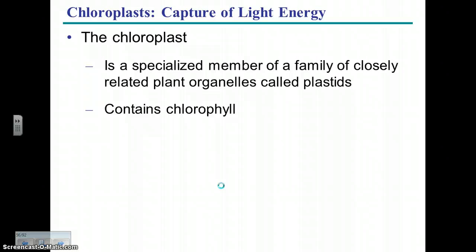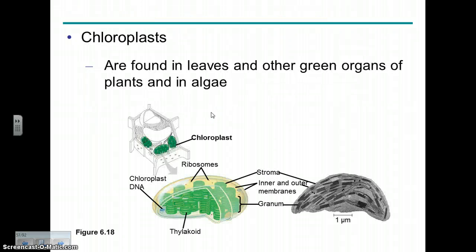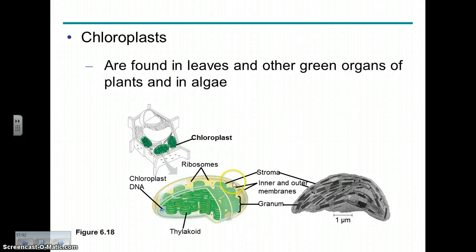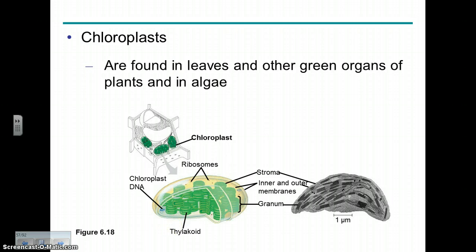Chloroplasts contain the photosynthetic pigments, including chlorophyll — the primary photosynthetic pigment. They have a couple of outer membranes and an inner thylakoid membrane with a quite complex internal structure, providing lots of surface area for the photosynthetic reactions. I'm going to end here — we'll need to do a second video for this lengthy chapter. Thanks.